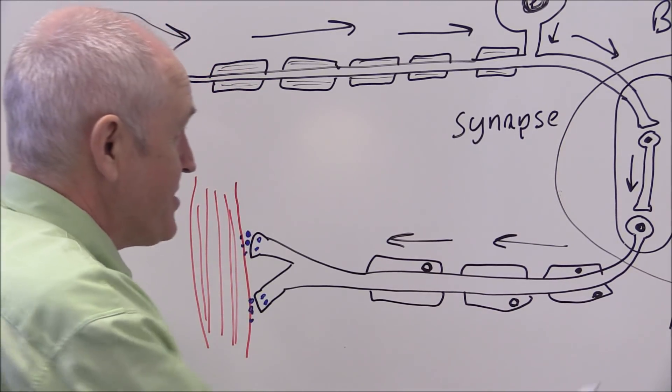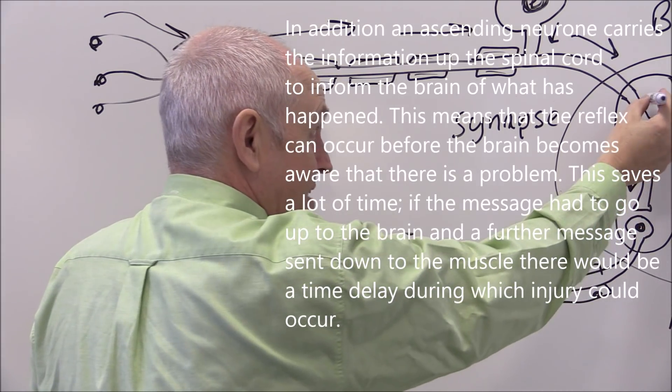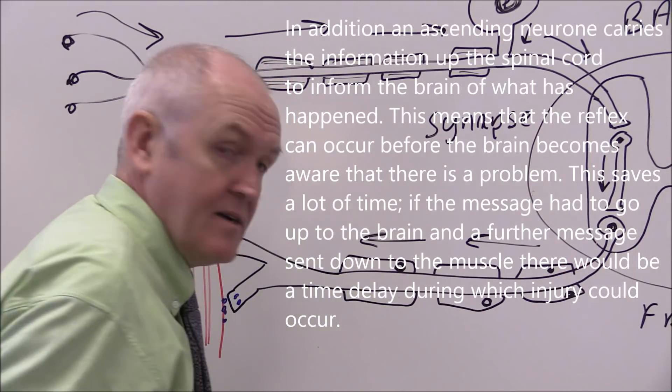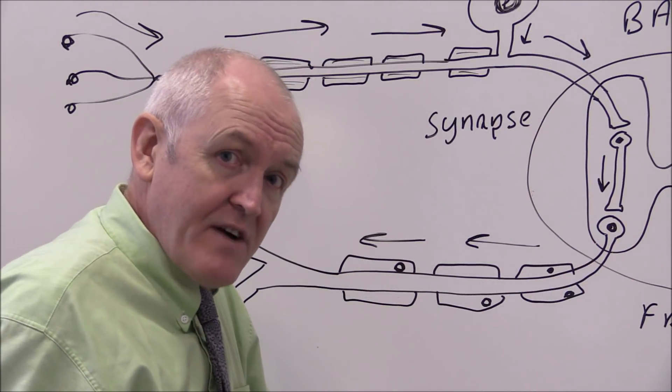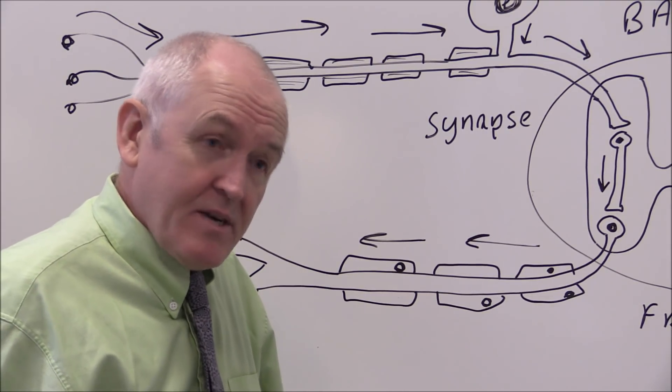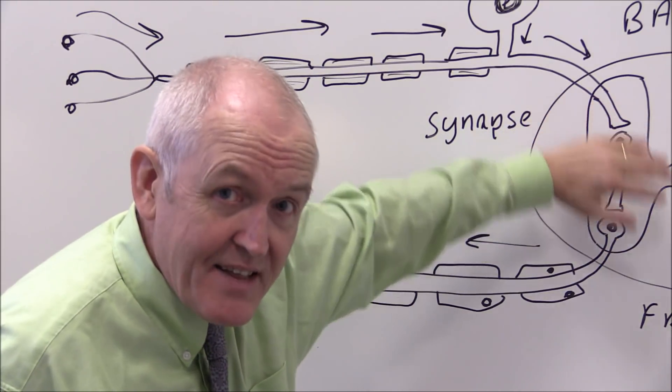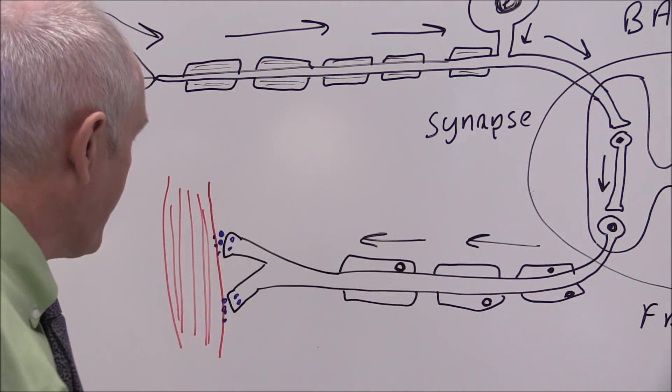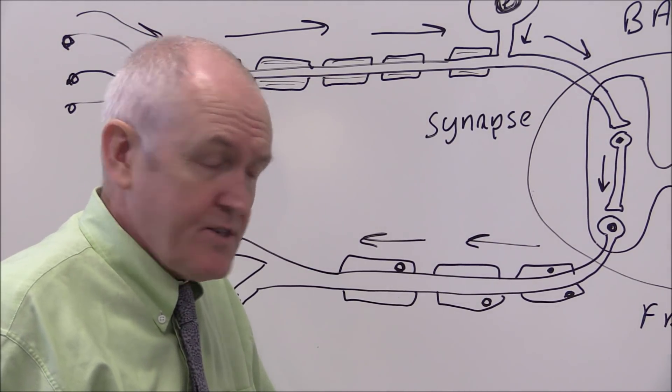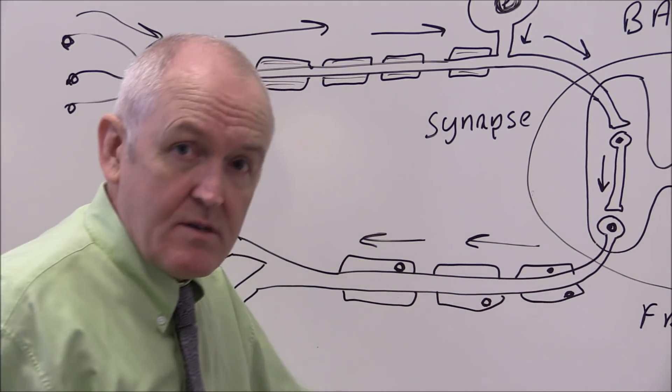Now at the same time there's other components from the sensory neuron that synapse with ascending neurons which take the information up to the brain. So the brain does become aware of what's going on, but slightly later. So the body's protected because the impulse goes from the sensory through the spinal cord at that level to the motor, performing some activity that protects the body from injury or damage. And then the brain is informed to let it know what has happened.